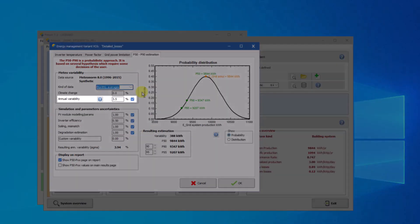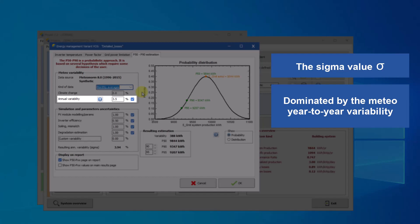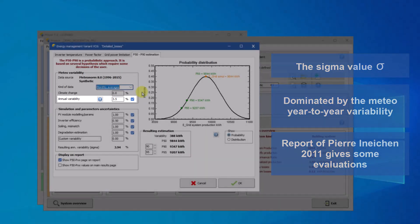The annual variability, sigma value, will be dominated by the Meteo year-to-year variability. This information is not commonly available. A report by Pierre Ineichen in 2011 gives some evaluation for about 30 sites in the world. PVSyst proposes default values according to these data.